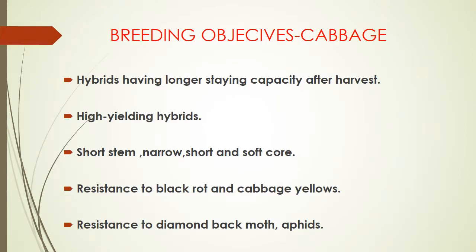Coming to breeding objectives: hybrids having larger staying capacity after harvest, high-yielding hybrids, short stem, narrow and soft core, resistant to black rot and cabbage yellows, resistant to diamondback moth and aphids.